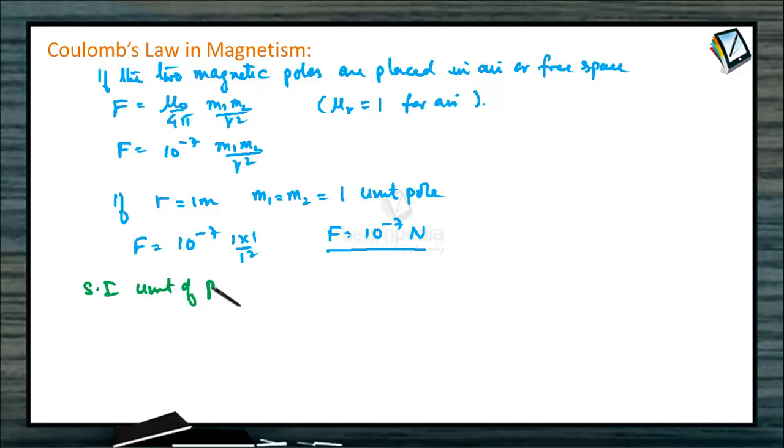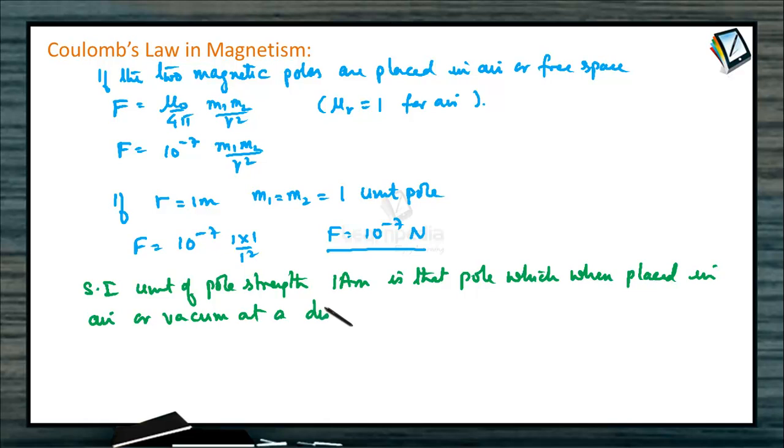SI unit of pole strength, that is 1 ampere meter, is that pole which when placed in air or vacuum at a distance of 1 meter from an identical pole experiences a force of repulsion of 10 to the power minus 7 newton.